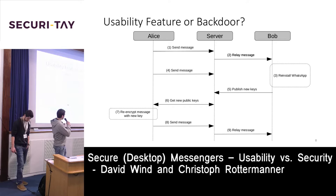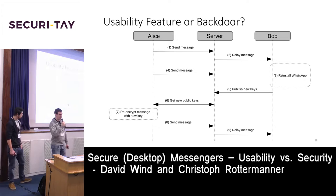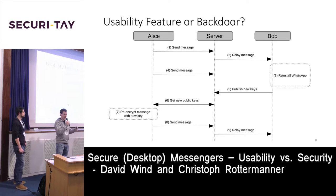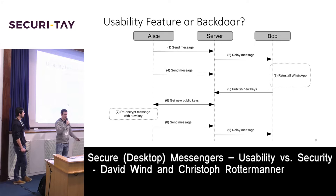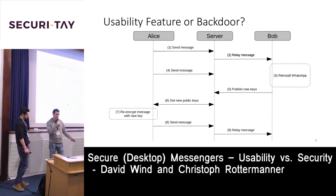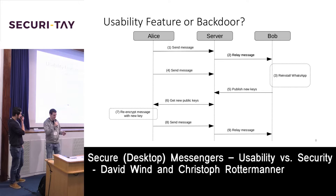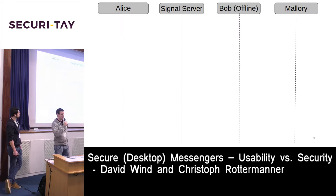WhatsApp uses so-called non-blocking messaging. If a key change occurs, you get no prompt requiring you to accept the new key — you simply get a notification if you enable this feature, and the messenger sends the message anyway. In Signal, you get a prompt asking you to accept the new key before sending. For Signal, this undelivered message would simply be lost — Bob would never get it, which is also not ideal. We also want to show how this could be exploited by an attacker.